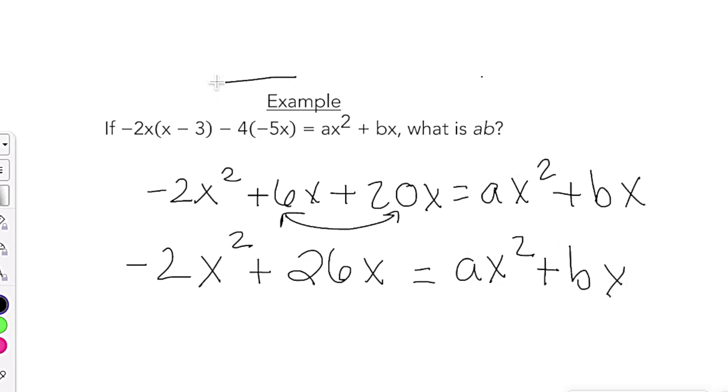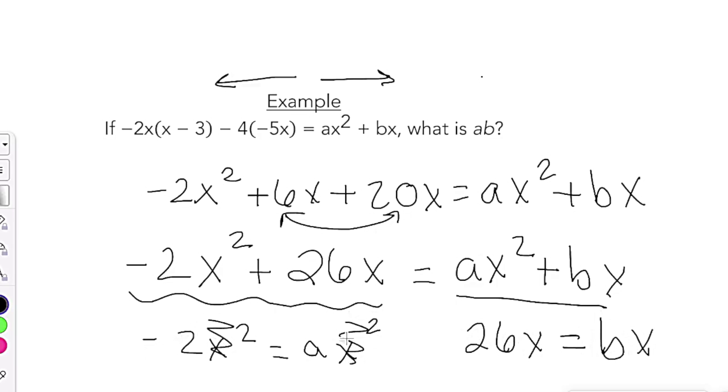Now I can simplify this a little by combining like terms. So 20 plus 6 is 26x. And then we got negative 2x squared equals ax squared plus bx. Now remember what I said about splitting this up left to right. So we're not going to isolate a variable. We're just comparing our left equation to our right equation. X squareds, as I would call them, are negative 2x squared and ax squared. And our regular x's are 26x and bx.